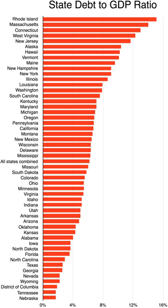State governments of the United States are institutional units exercising some of the functions of government at a level below that of the federal government. Each state's government holds fiscal, legislative, and executive authority over a defined geographic territory. The United States comprises 50 states: 13 that were already part of the United States when the present Constitution took effect in 1789, plus 37 admitted since by Congress as authorized under Article 4, Section 3 of the Constitution.